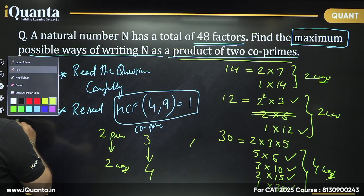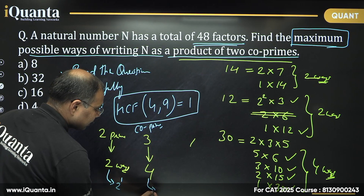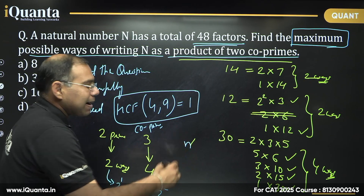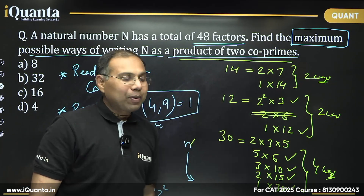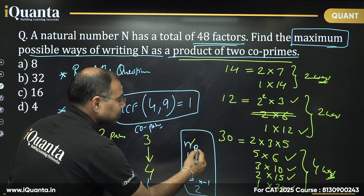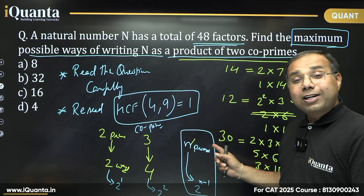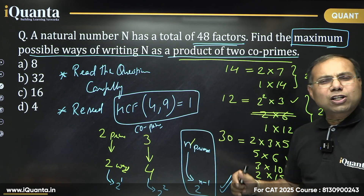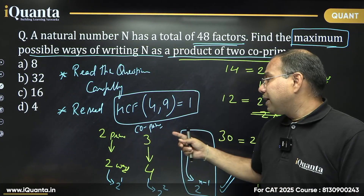The pattern is: with two primes there are 2 = 2¹ ways, and with three primes there are 4 = 2² ways. In general, if a number contains n distinct prime numbers, the number of ways to write it as a product of two co-primes is 2^(n−1). That is our shortcut, derived from observing this pattern. The power of each prime doesn't matter — only how many distinct primes are present.